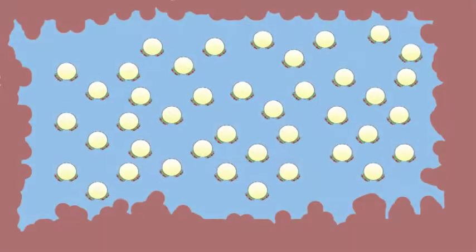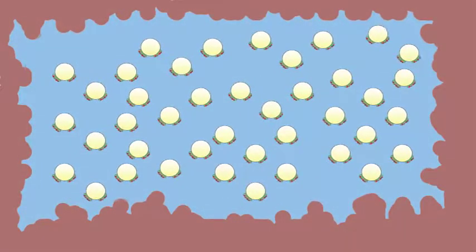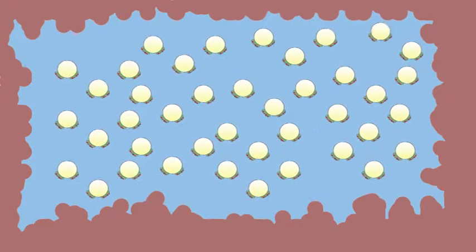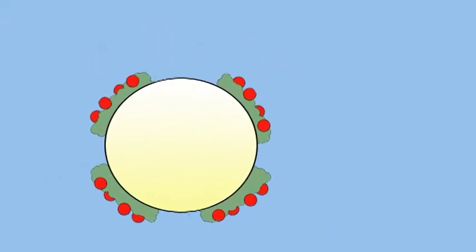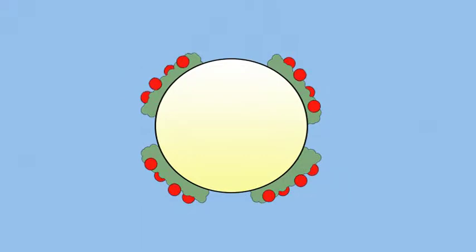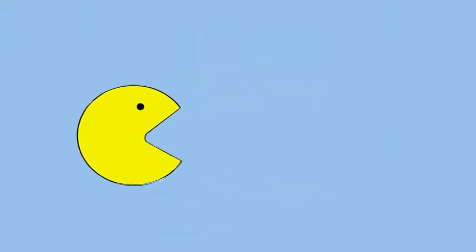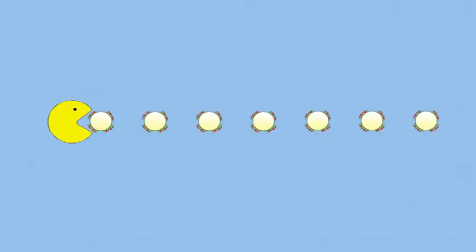This allows the fat droplets to be suspended in an aqueous mixture, which in this case is the fluid within the small intestine. Once the fats are suspended in the aqueous environment of the small intestine by the bile, lipases can then digest the triglycerides by removing fatty acids from the glycerol backbone, creating free fatty acids and a monoglyceride for absorption.